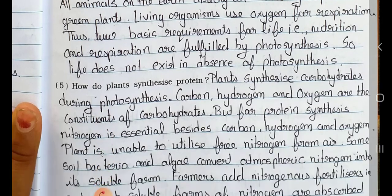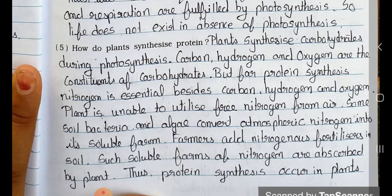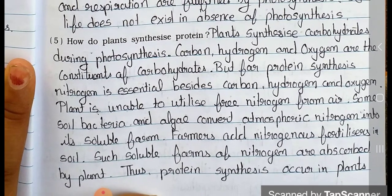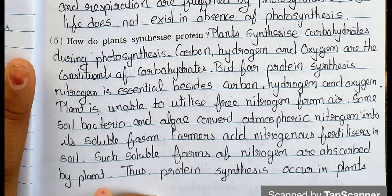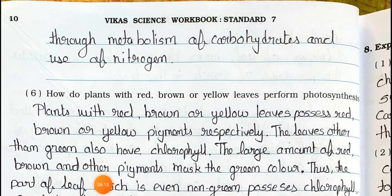Question number five: How do plants synthesize protein? Answer: Plants synthesize carbohydrates during photosynthesis. Carbon, hydrogen, and oxygen are the constituents of carbohydrate. But for protein synthesis, nitrogen is essential besides carbon, hydrogen, and oxygen. Plants are unable to utilize free nitrogen from the air. Some soil bacteria and algae convert atmospheric nitrogen into its soluble form. Farmers add nitrogenous fertilizers to soil. Such soluble forms of nitrogen are absorbed by the plant. Thus, protein synthesis occurs in plants through metabolism of carbohydrates and the use of nitrogen.